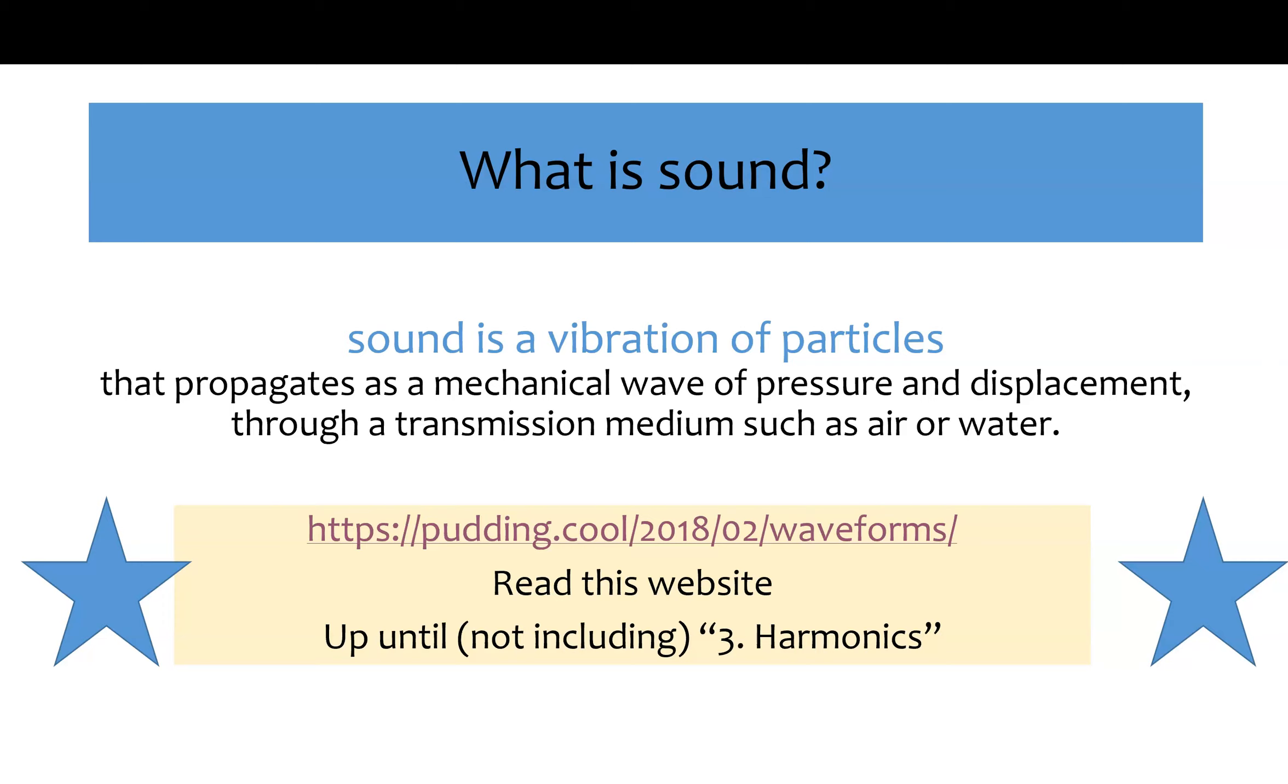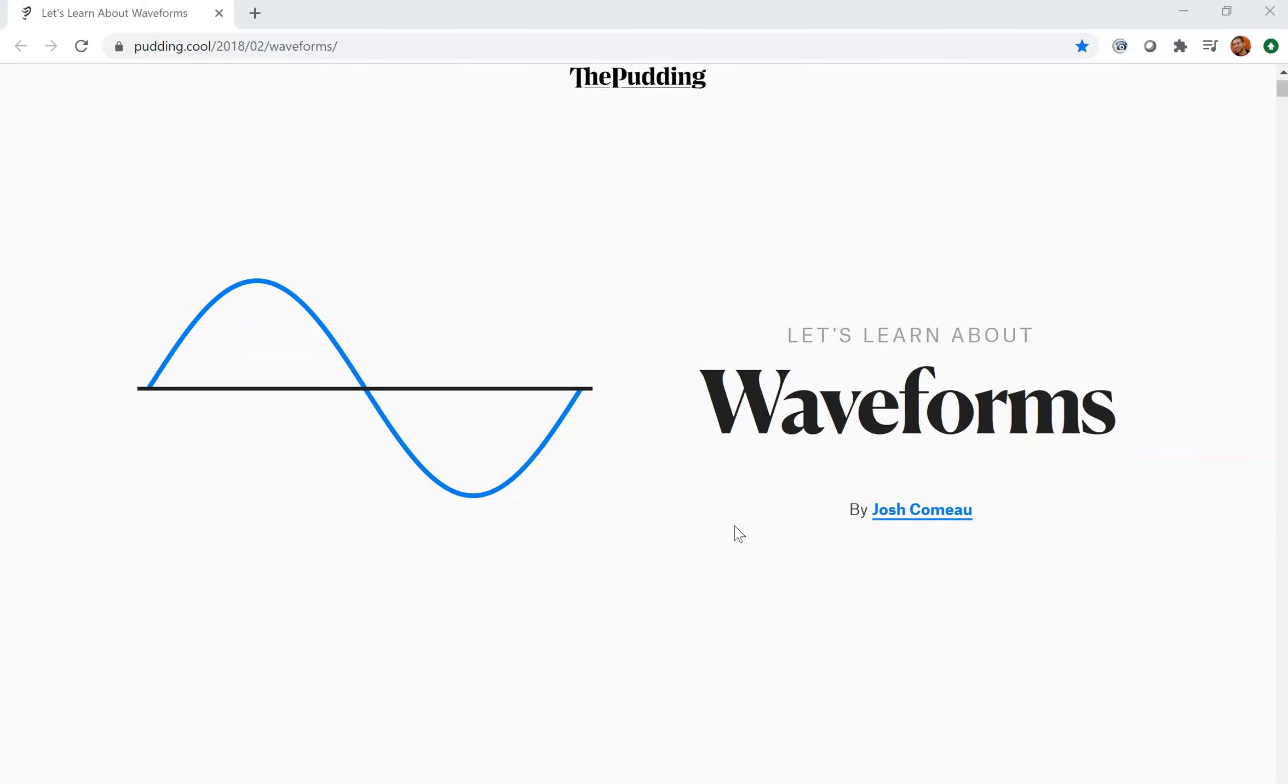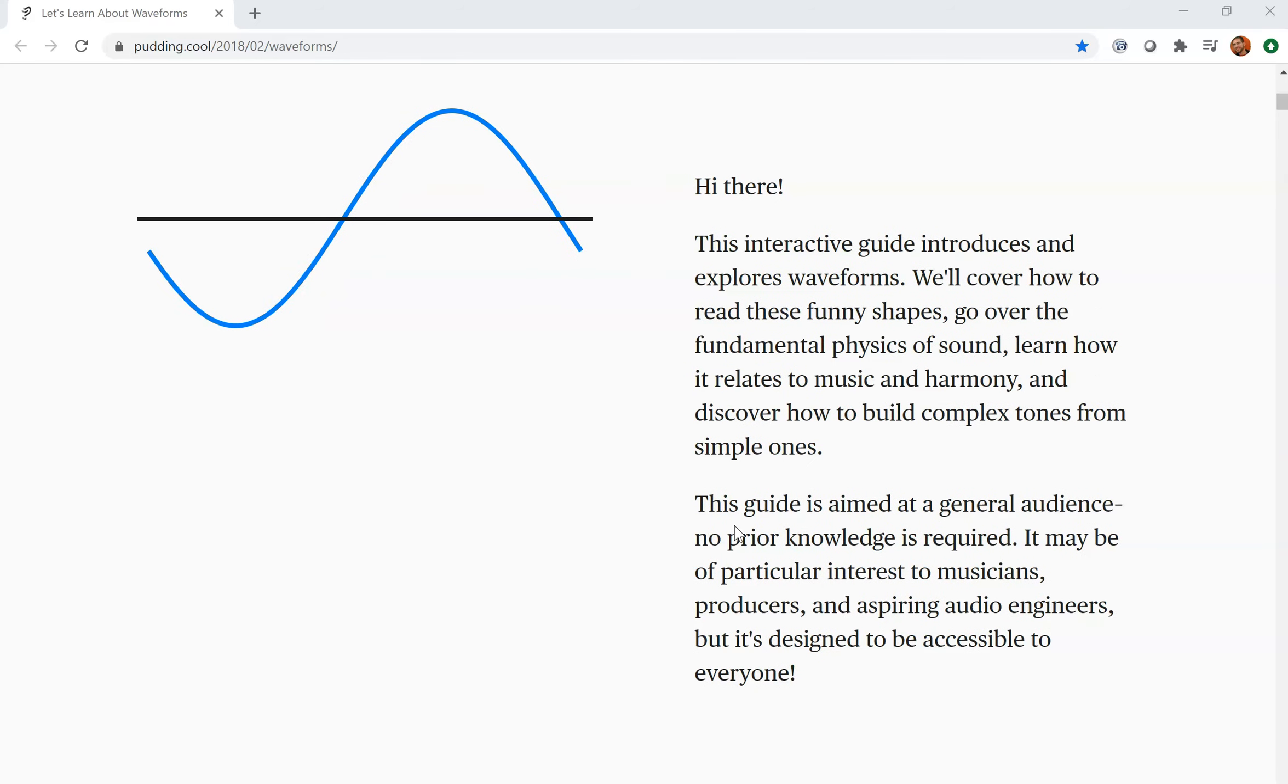So what I want to do now is visit this website that I have linked here and linked in our lecture notes just to talk about what this means and what some of the properties are that we're seeing when we see a sound wave. All right, here we are at the website, the Pudding website. They have a lot of different, really interesting visualizations of data that I'd invite you to check out. So this one is about waveforms, as we can see. And what I want to do is just quickly walk you along the site to point out a few things.